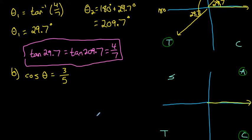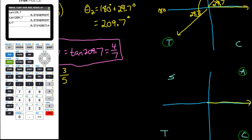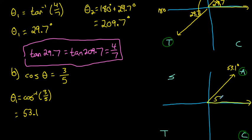Your calculator will give you the first angle. If we do inverse cos of the ratio 3 over 5, the calculator tells us one possible angle: approximately 53.1 degrees. So if we rotate 53.1 degrees counterclockwise between the initial arm and a terminal arm, the reference angle — the angle between the terminal arm and the x-axis — is 53.1 degrees.